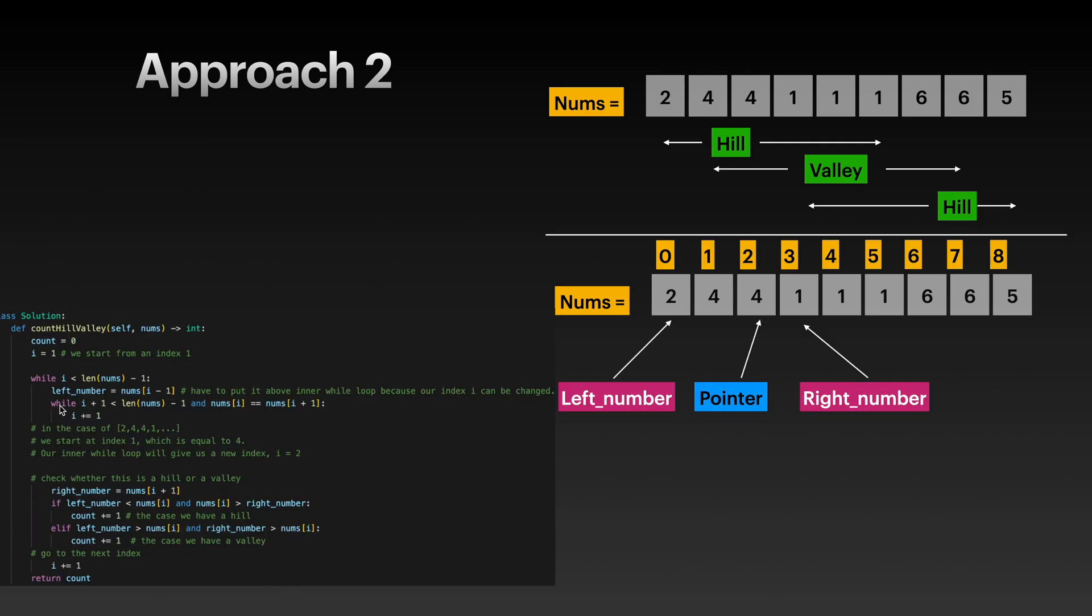That's what's going on in this while loop. Once we exit the while loop, our right_number will be whatever i we have here, right, plus one. In that case, our right_number will be pointing here, and then we compare left_number and right_number to determine if we have a hill or a valley. That's Approach 2.